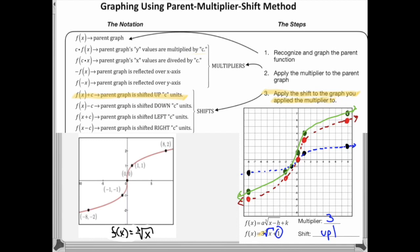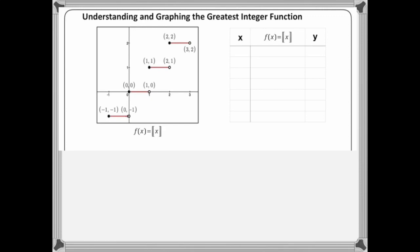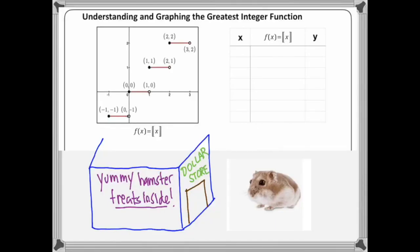That's the general idea on how we graph our functions using the parent-multiplier-shift method. Now let's take a look at a new type of function for Math 3. This next function might be better served with a little story. Say we have a hamster that wants some hamster treats. The hamster goes ahead and runs across the dollar store — they sell yummy hamster treats inside. The hamster starts asking people passing by for some change to get something from the dollar store, because the hamster didn't bring any money and didn't know the dollar store was in the neighborhood.